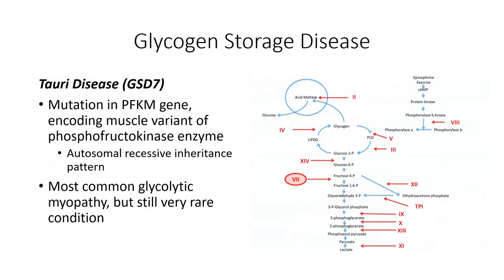Glycolytic disorders are particularly uncommon. As glycolysis is of such critical importance to a number of body tissues, most mutations would not be conducive to life. In the case of GSD-7, also known as Tauri disease, the defect is in the muscle-specific isoform of the phosphofructokinase enzyme, due to a mutation in the PFKM gene on chromosome 12. A number of presentation patterns have been observed, including the most common classic form appearing in childhood, the more severe infantile form, and a late-onset form in which the most severe symptoms are generally absent.